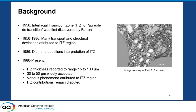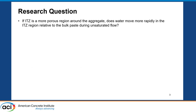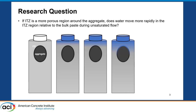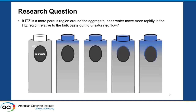The research question we came up with was: if ITZ is this slightly more porous region around the aggregate — and when I say more porous, I mean on the nanometer scale, so we're talking about capillary and gel pores — we would expect that water would move more rapidly relative to the bulk cement paste during unsaturated flow. So do we actually see this? The idea is if water is absorbed, it would hit this ring and have a preferential pathway that's slightly faster around the aggregate.